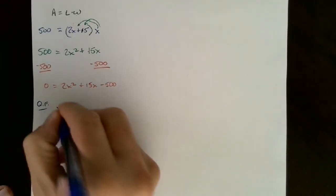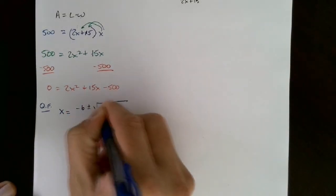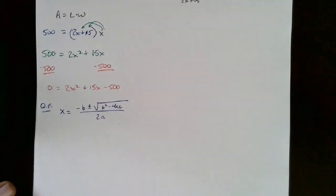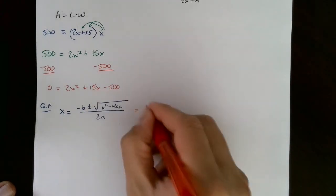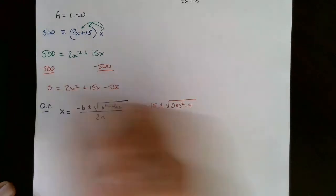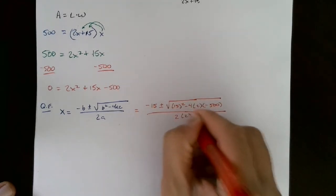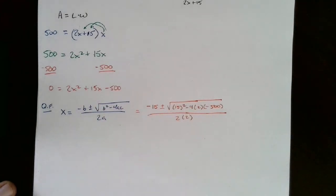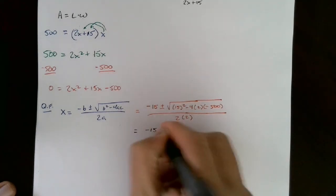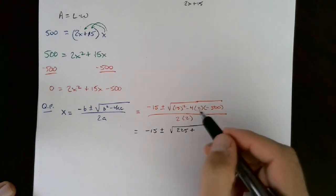The quadratic formula: x equals negative b plus or minus the square root of b squared minus 4ac, all over 2a. Remember, a, b, and c are the coefficients, so a = 2, b = 15, and c = −500. Substituting: x equals negative 15 plus or minus the square root of 15 squared minus 4 times 2 times negative 500, all over 2 times 2. Simplifying: negative 15 plus or minus the square root of 225 plus 4000, over 4.